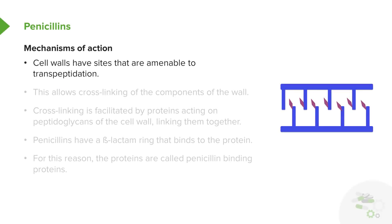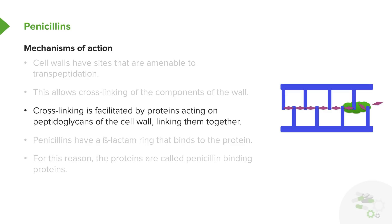Penicillins are active on the cell wall. The cell walls have sites that are amenable to transpeptidation, which allows cross-linking of the components of the wall. When you have cross-linking, you have a stronger wall. Cross-linking is created or facilitated by proteins that act on those peptidoglycans of the cell wall and link them together, much like a zipper does.